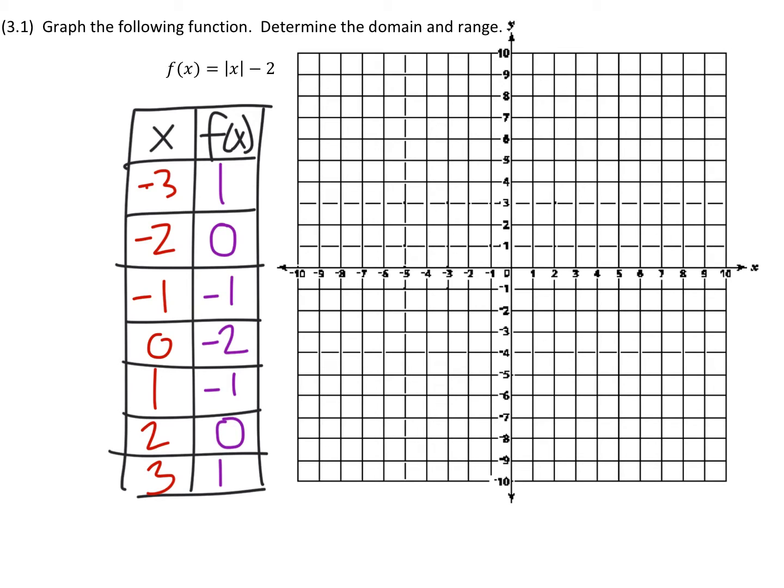I'm going to start with a negative 3, 1, which is right here. We got a negative 2, 0. A negative 1, negative 1. A 0, negative 2. So we see a pattern. This is quite linear, but based on the table, we see a change in direction.